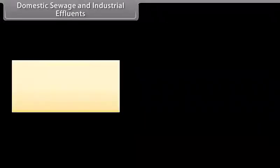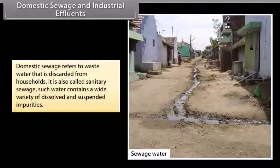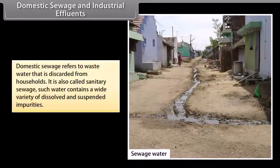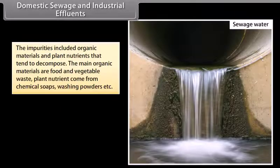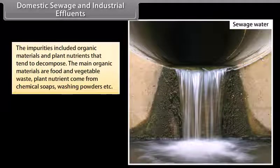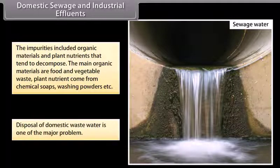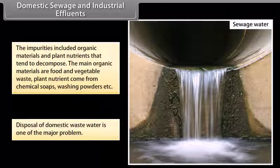Domestic sewage and industrial effluence. Domestic sewage refers to waste water discarded from households, also called sanitary sewage. Such water contains a wide variety of dissolved and suspended impurities. The impurities include organic materials and plant nutrients that tend to decompose. The main organic materials are food and vegetable waste. Plant nutrients come from chemical soaps, washing powders, etc. Disposal of domestic waste water is one of the major problems.